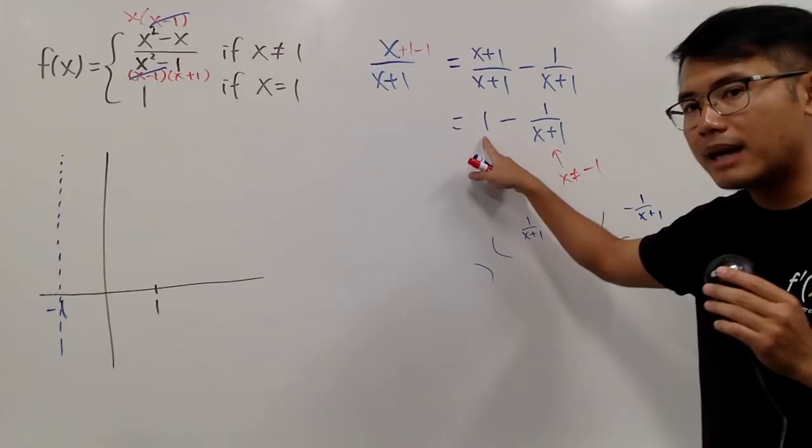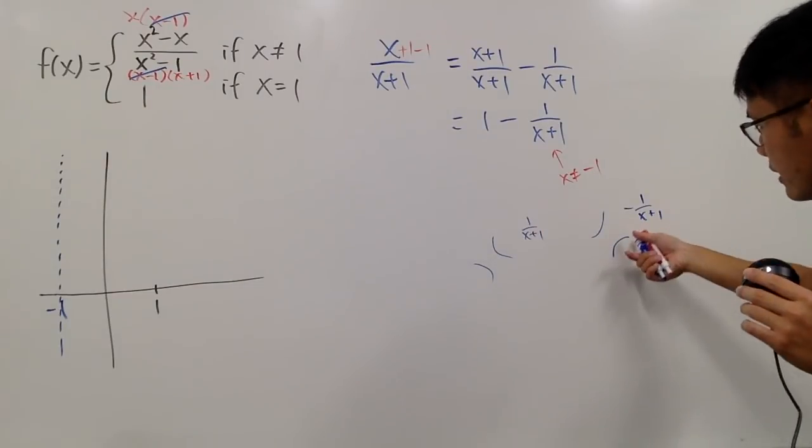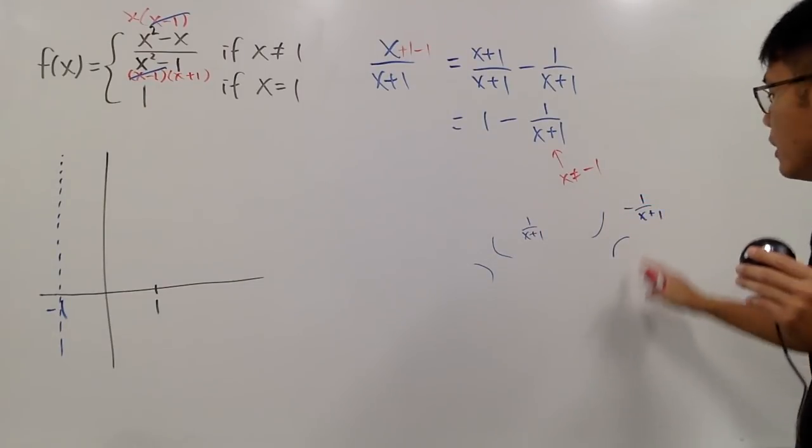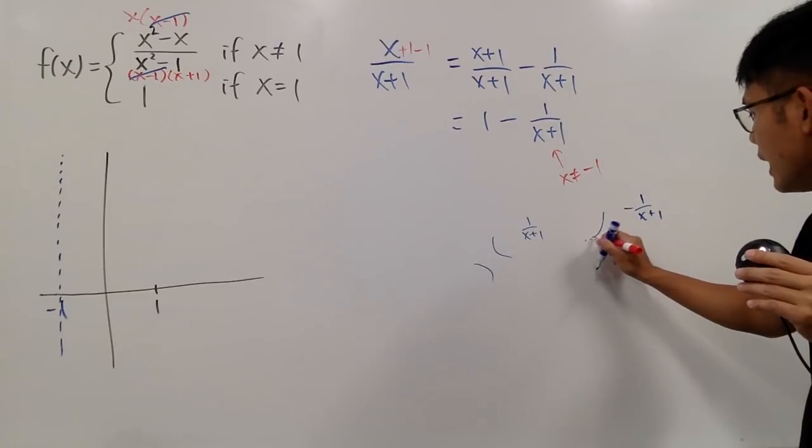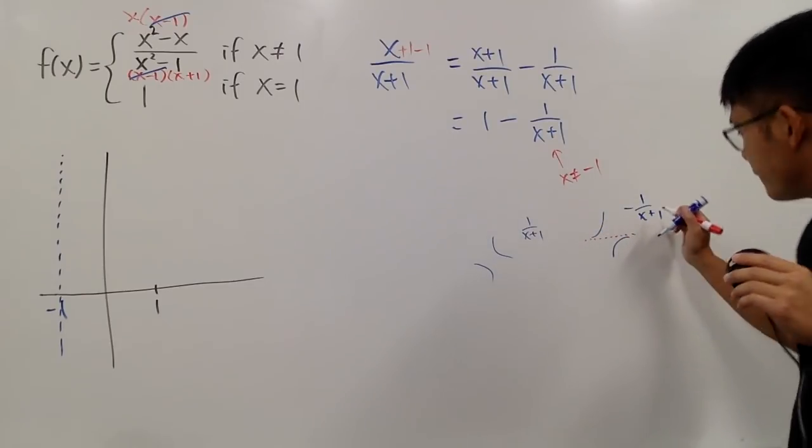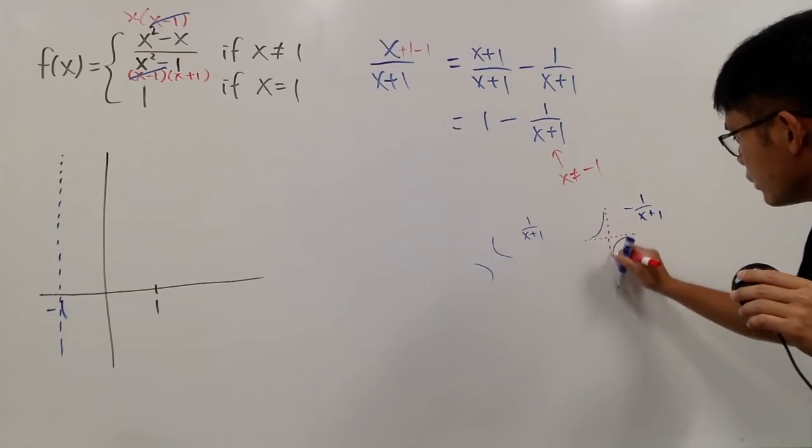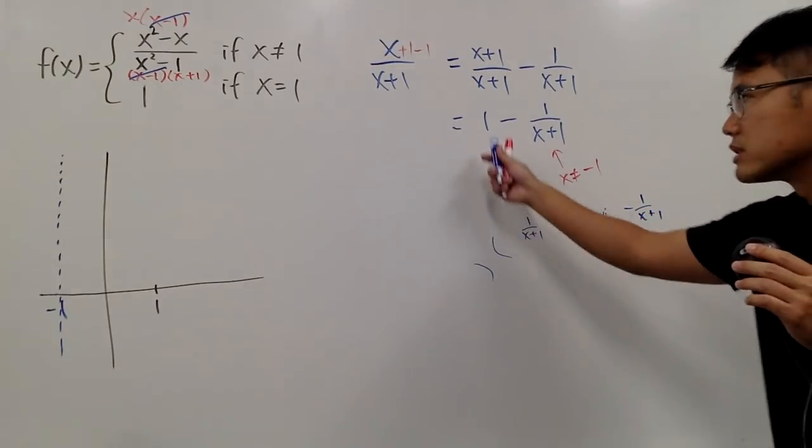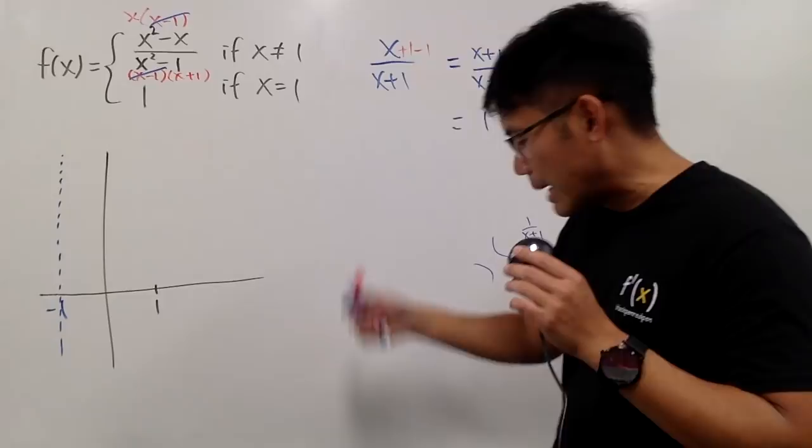And then when we have this positive 1 in front, we bring this up one time. This right here, originally, you have a horizontal asymptote at y equal to 0, vertical asymptote at x equal to negative 1. But because of this 1, we have to bring this up one time.